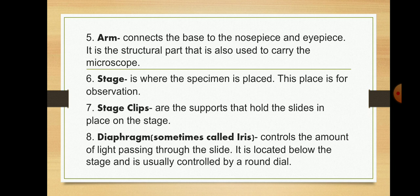Eighth, the diaphragm, also called iris. It controls the amount of light passing through the slide. It is located below the stage and is usually controlled by a round dial.